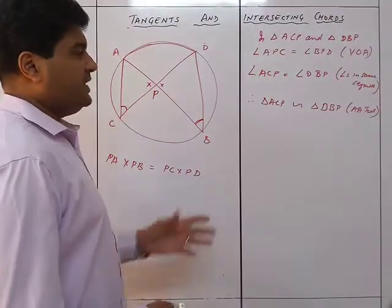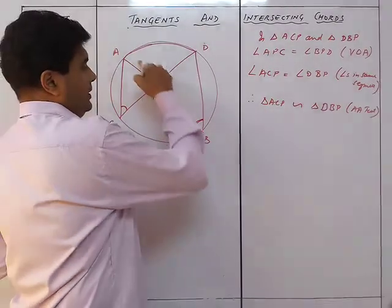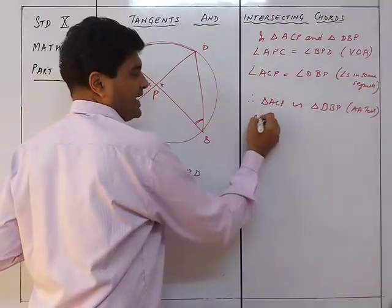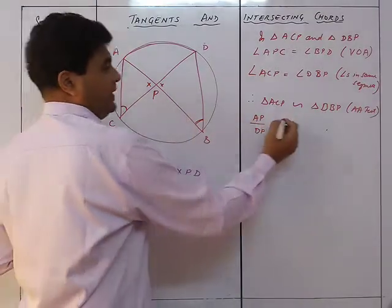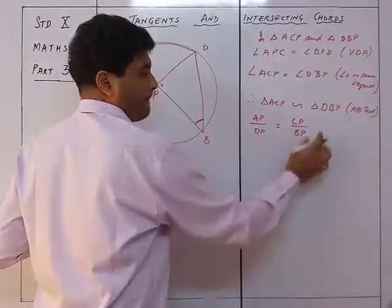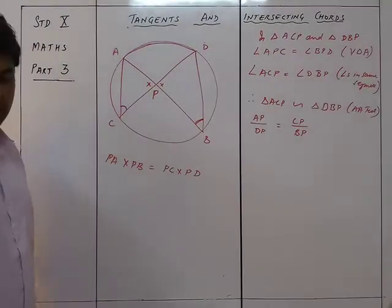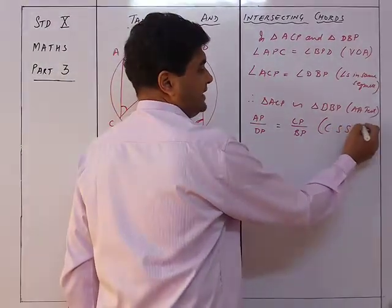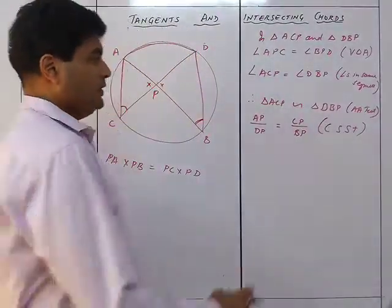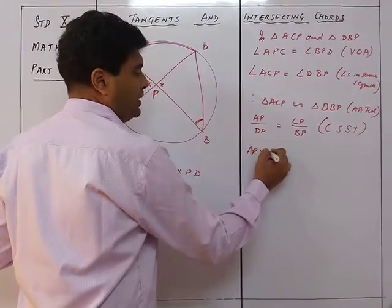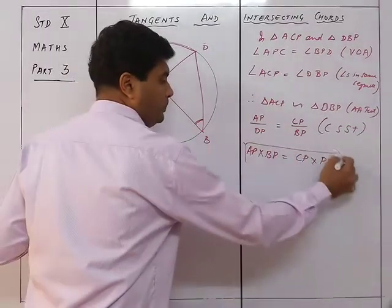Once the triangles are similar, we take ratios of corresponding sides: AP/DP = CP/BP (we don't need AC and DB here). This is by CSST — corresponding sides of similar triangles are proportional. Cross-multiplying gives AP × BP = CP × DP, which is what we needed to prove.